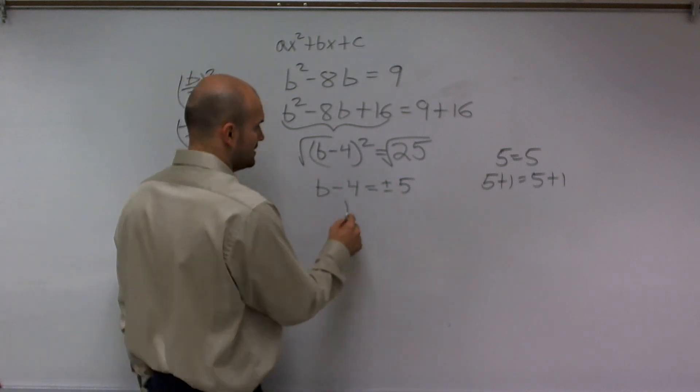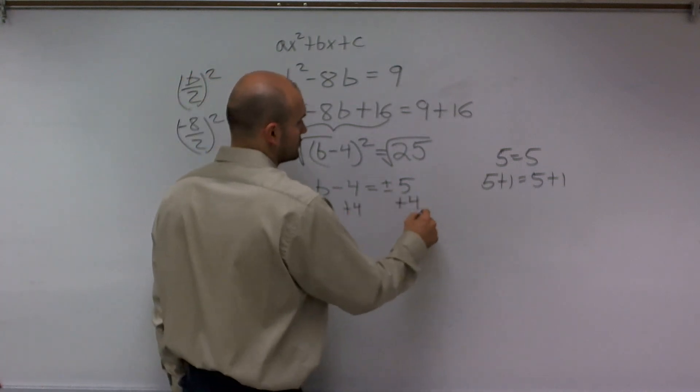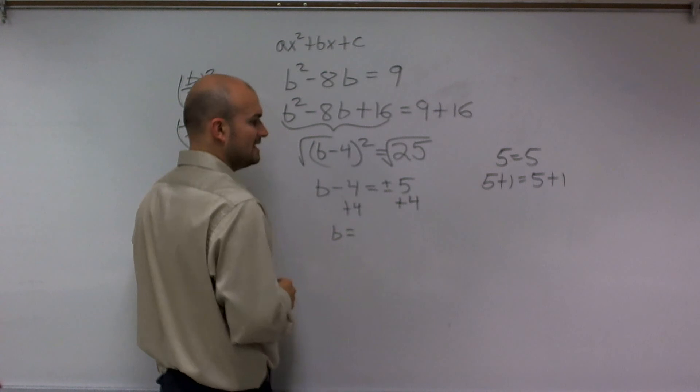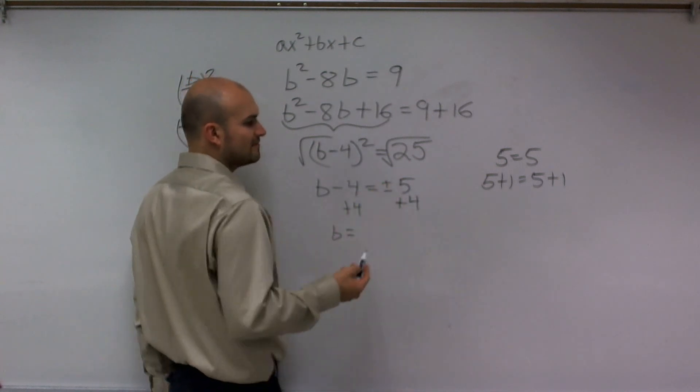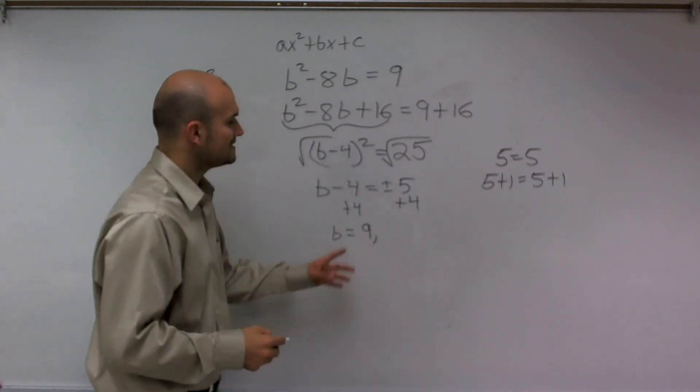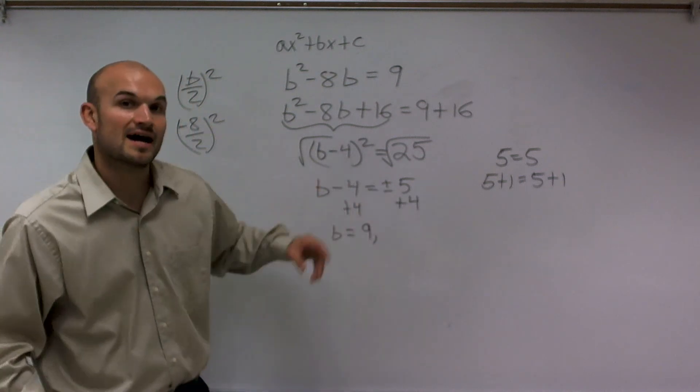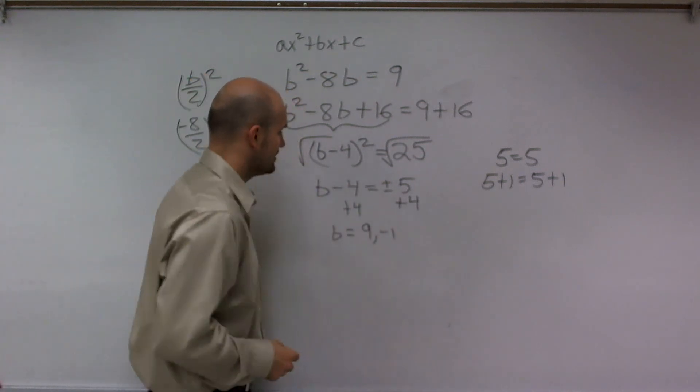To solve for my b, I'll add 4 to both sides. I've got b equals positive 5 plus 4, which is 9, and b also equals negative 5 plus 4, which is negative 1.